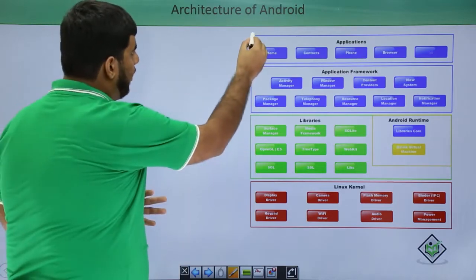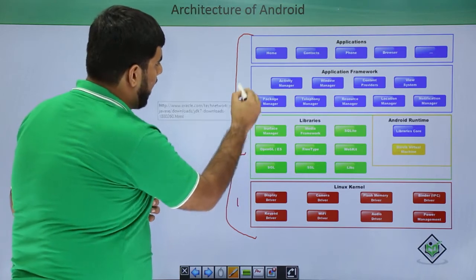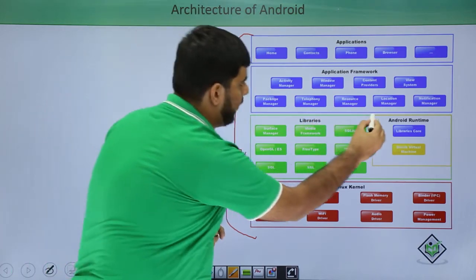See, Android is having basically a 5 layer architecture: 1, 2, 3, and 4, with the 5th one being the Android Runtime.